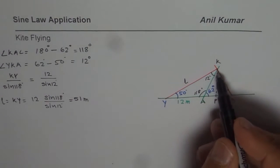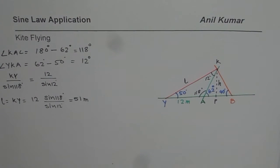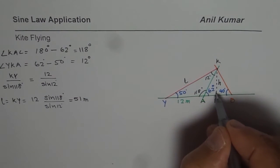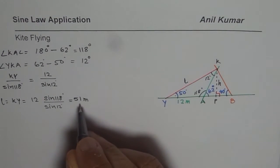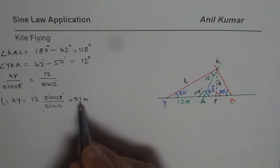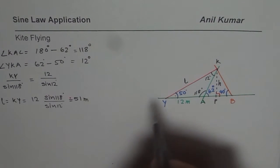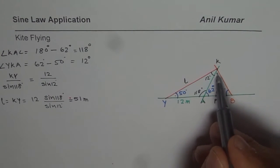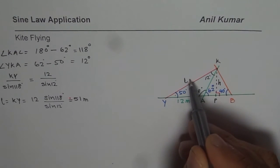Now we need to find the height of the kite KP. To find the height, we drop a perpendicular as we have done. Since this is a right triangle and we know the angle is 50 degrees and the hypotenuse is 51 meters — for accuracy you could use 50.96 — we should use sine, which is opposite over hypotenuse.